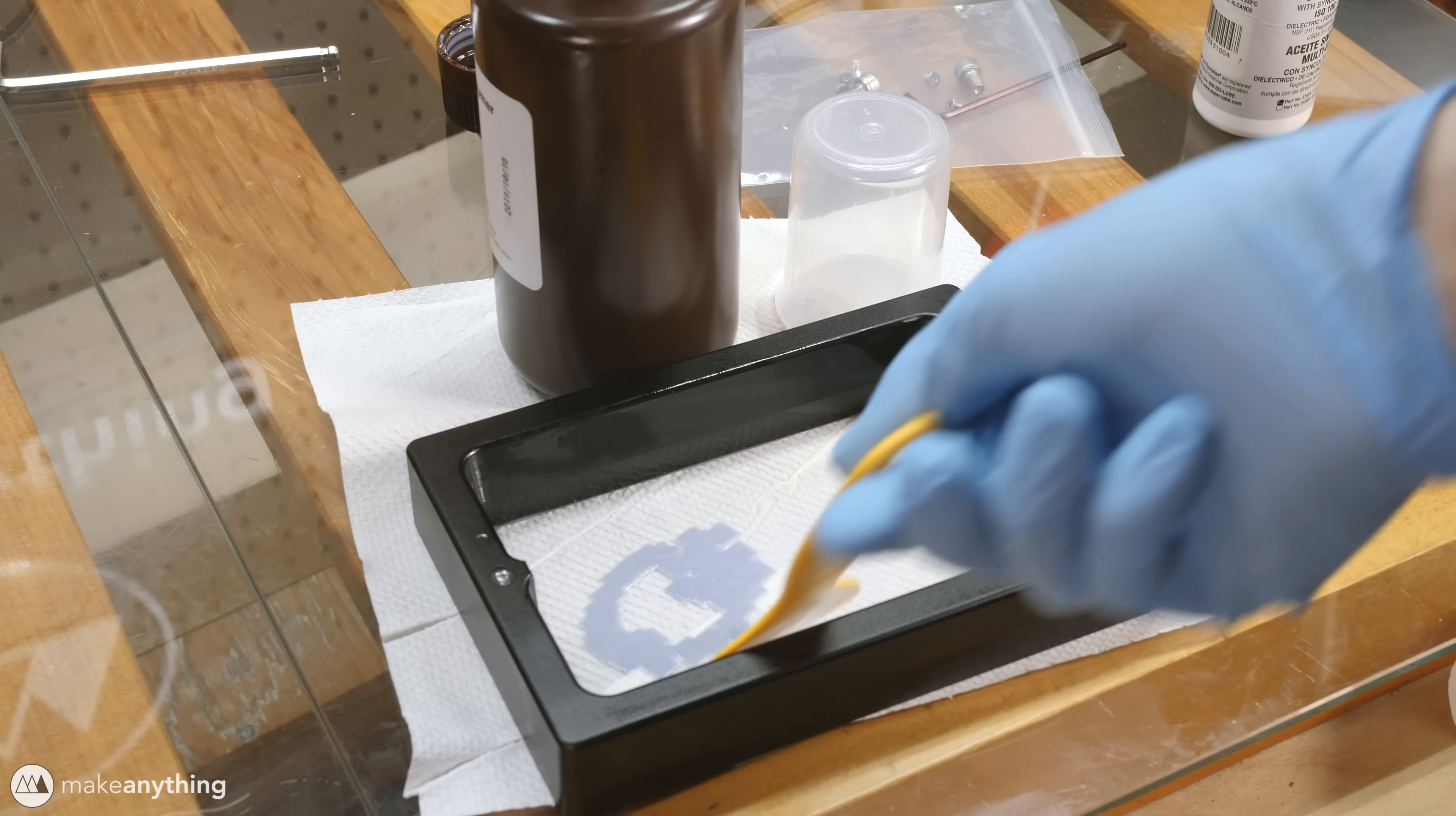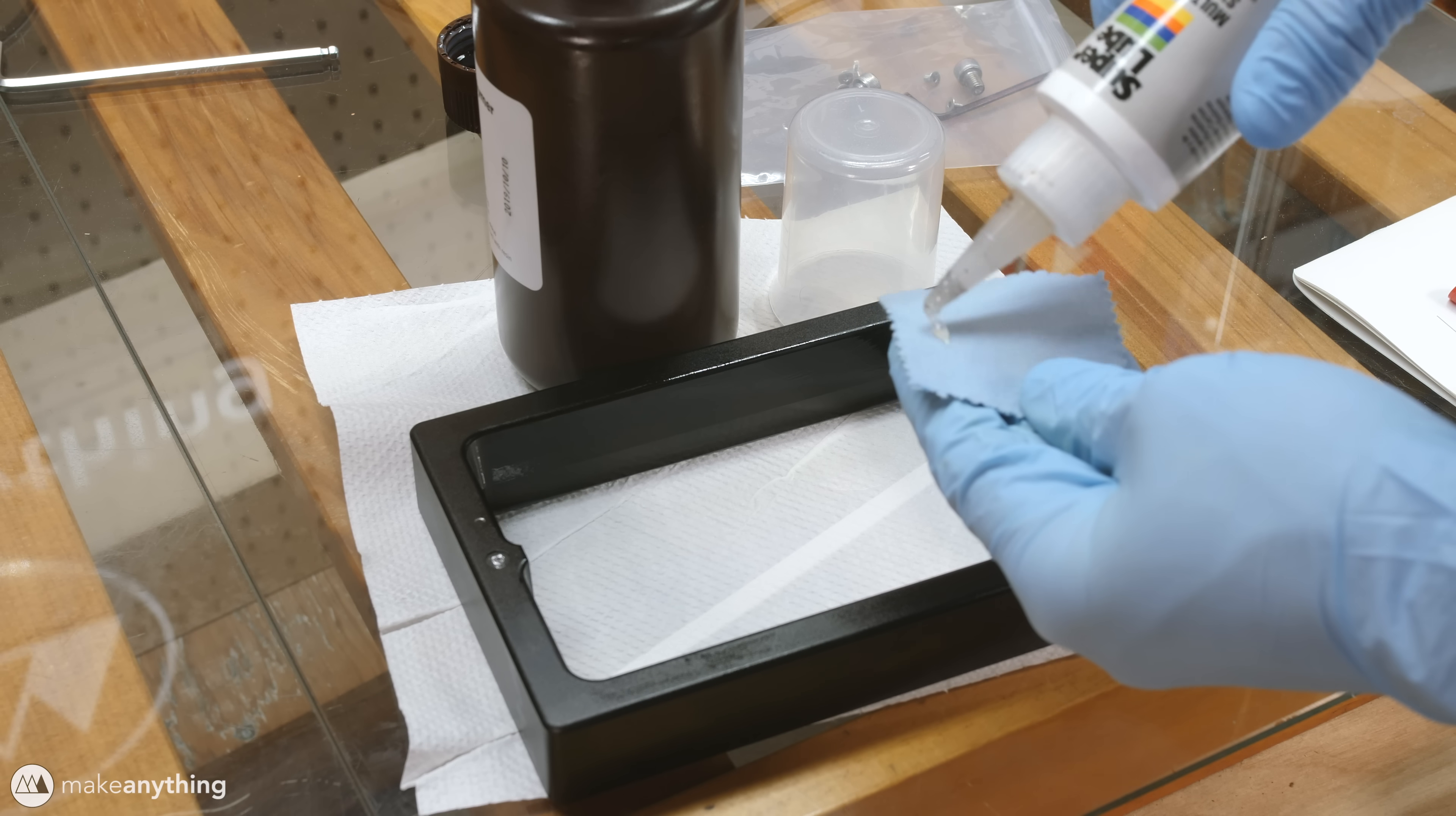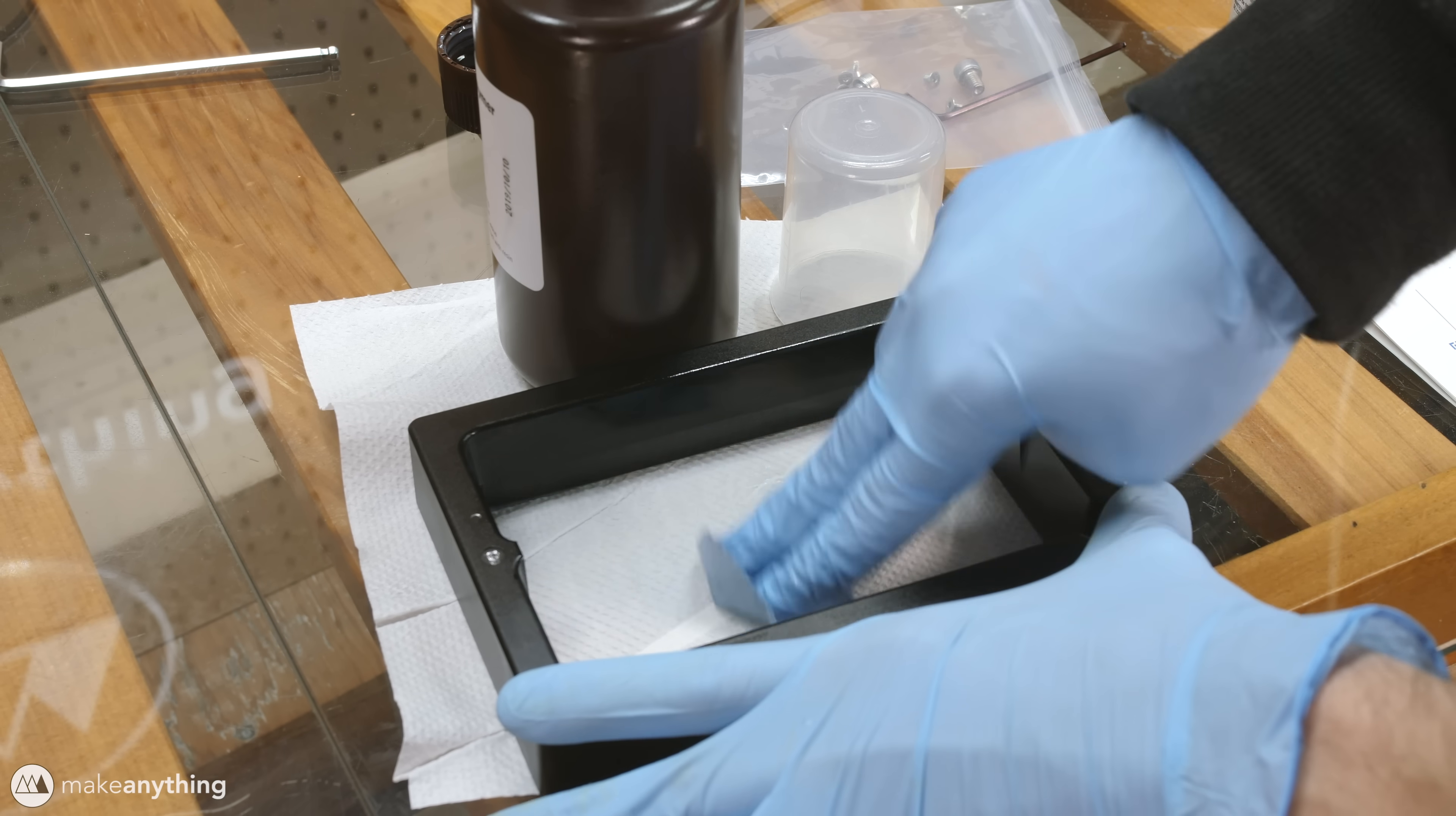The next potential fix that I read about online was to try lubricating the bottom surface of the vat. So after thoroughly cleaning the film with isopropyl alcohol and a paper towel I applied a small amount of PTFE lubricant to this microfiber cloth and I wiped it directly onto the film making sure to cover every little bit of the surface.